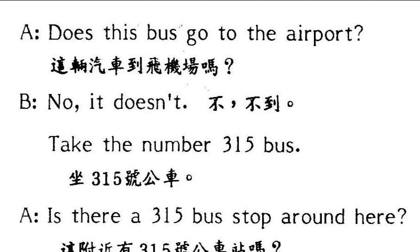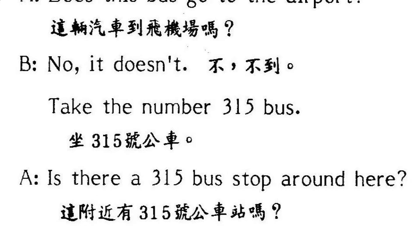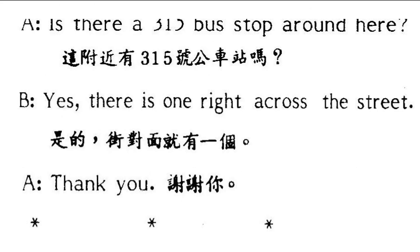Is there a 315 bus stop around here? Is there？就是「有吗？」这是一个存在的「有」，本来是 there is，颠倒过来就是「有吗？」有没有一个 315 bus stop？Around here 就是在这个四周、左右。围绕着这个四周，有没有这么一个站呢？Yes，有啊。There is one right across the street. There is 就是肯定句「有」。千万不要把这两个字翻成「那里有」，要翻成一个中文字「有」就好了。